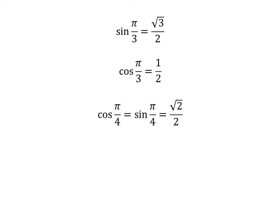As we know, sine of pi upon 3 is equal to square root of 3 upon 2, cosine of pi upon 3 is equal to half, and cosine of pi upon 4 is equal to sine of pi upon 4 is equal to square root of 2 upon 2. So we plug in these values in the above equation.